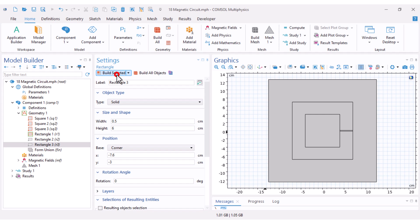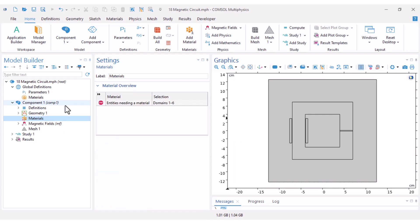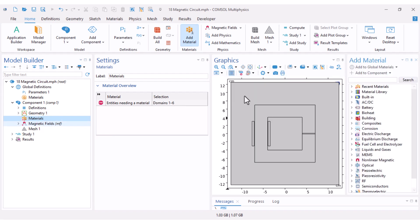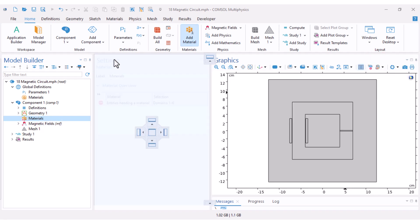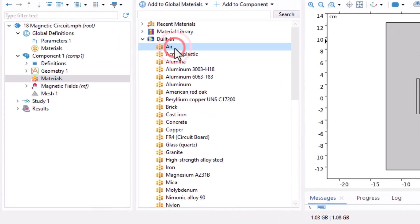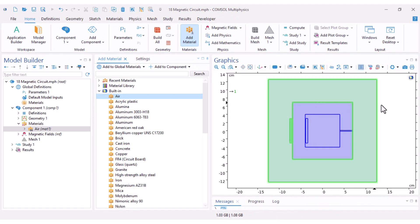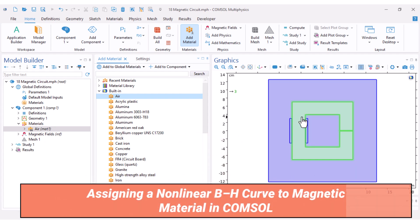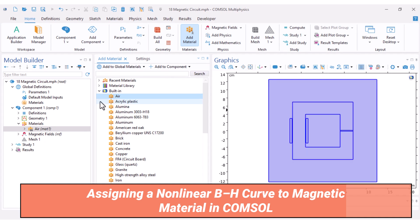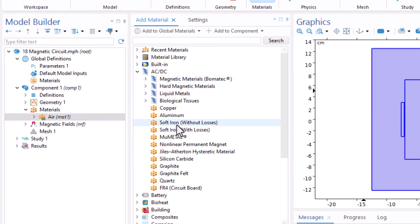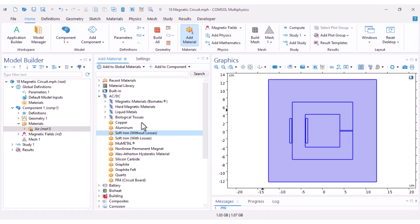I also added a 2 millimeter wide rectangle to serve as the air gap and two more rectangles to represent the coil windings. Now let's assign materials. Under built-in materials, click Add Material from Library. I double click air and assign it. The entire model turns to air but our core isn't air, it's non-linear soft iron.